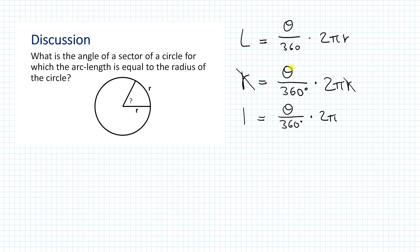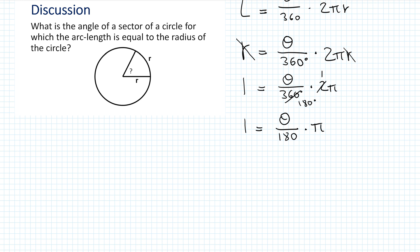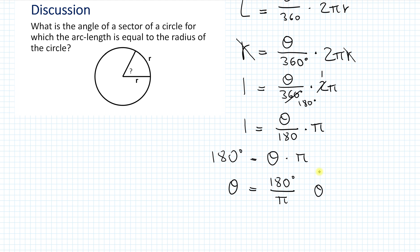The next step is to simplify 2 over 360, so 2 becomes 1 and 360 becomes 180. Now we have 1 equals theta over 180 times π. To solve for theta, we multiply both sides by 180, giving 180 degrees equals theta times π. Finally, isolating theta, we get theta equals 180 degrees over π, which is approximately equal to 57.3 degrees.